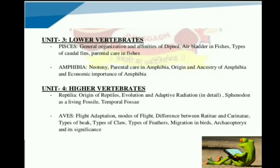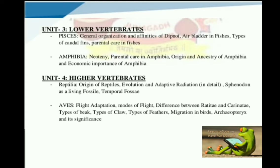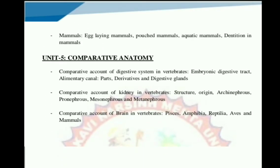Then we discuss class Aves, studying flight adaptation, mode of flight, difference between Ratitae and Carinate, types of beak, types of claws, types of feathers, migration in birds, Archaeopteryx and its significance. Then the last class, Mammals: egg-laying mammals, pouch mammals, aquatic mammals, and dentition in mammals.